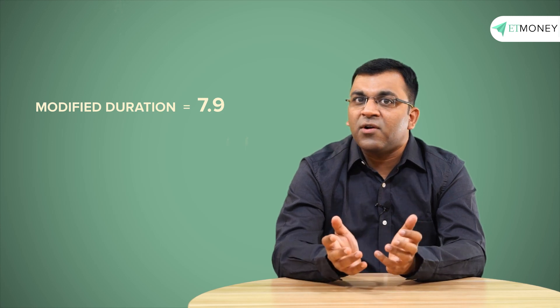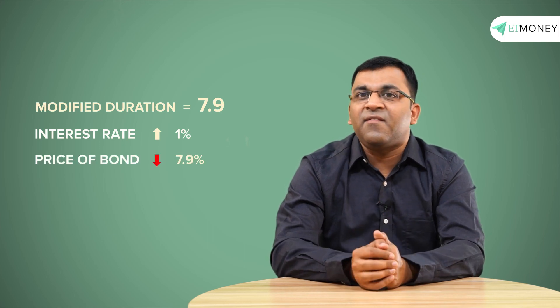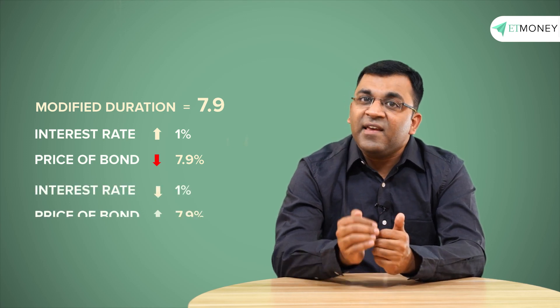How do we interpret this 7.9? Since the modified duration illustrates the effect of a 1% change in interest rates on the price of the bond: if the interest rate increases by 1%, the price of this bond will decrease by 7.9%; if the interest rate decreases by 1%, the price will increase by 7.9%. The modified duration analysis also indicates the fund manager's view on interest rate movement. If a debt fund has a lower modified duration, it's probable the fund manager expects interest rates to increase and has opted for short-duration papers to soften the impact of a price fall.